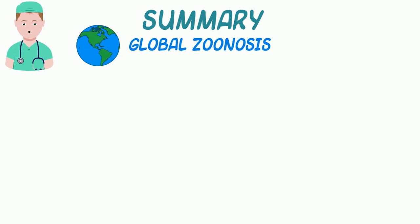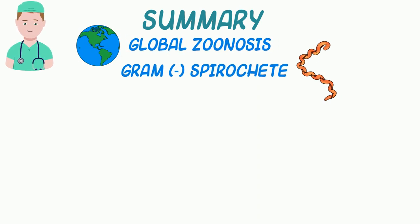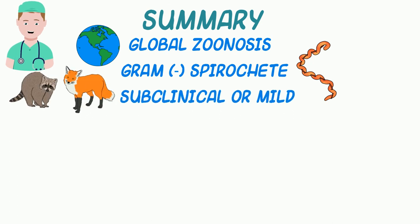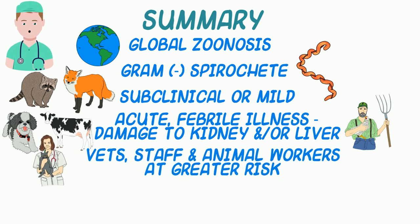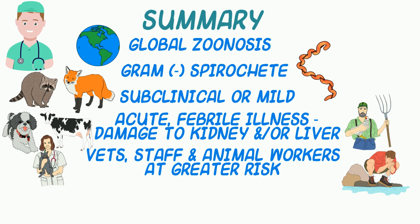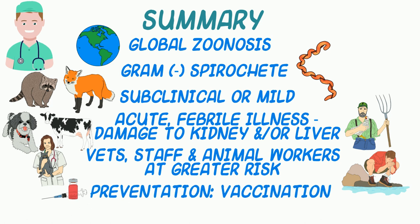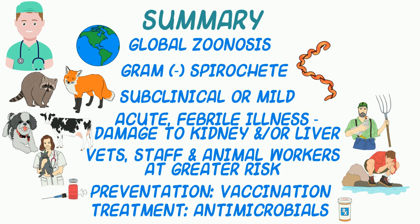In summary, leptospirosis is a zoonotic disease caused by a gram-negative spirochete bacteria that induces subclinical or mild disease in maintenance hosts and can cause an acute febrile illness characterized by damage to the kidney and/or liver in incidental hosts, including most domestic animals and man. Veterinary staff and animal workers are at greater risk of contracting leptospirosis, but the most common source of infection in the general public is exposure to water sources contaminated by urine of domestic or wild animals. Prevention is best accomplished through routine vaccination of domestic animals and appropriate antimicrobial treatment in the case of acute infections. Tetracyclines are recommended for eliminating the renal carrier state.